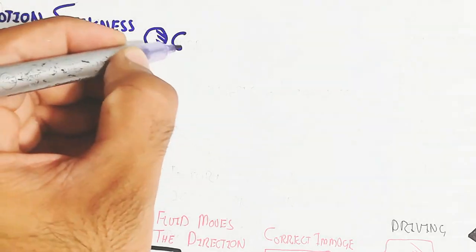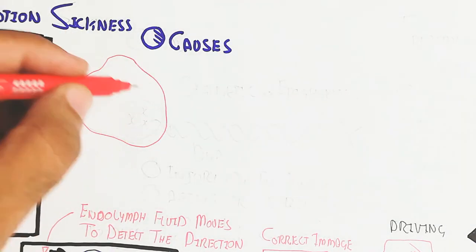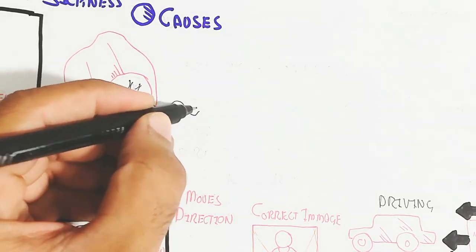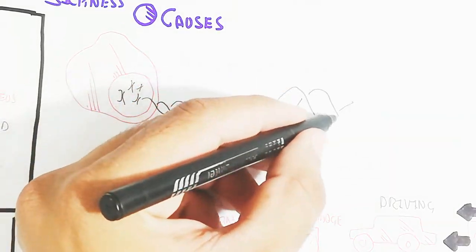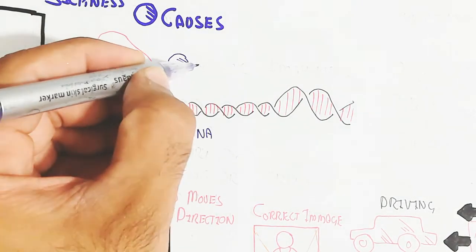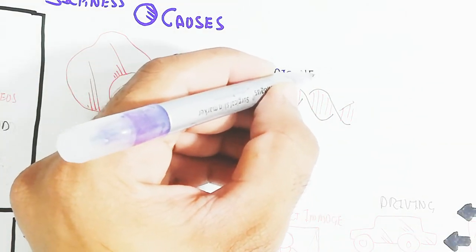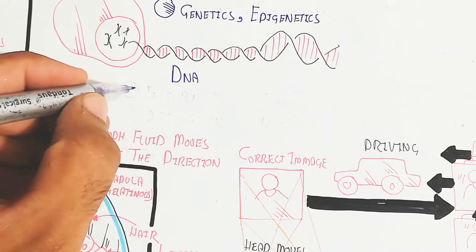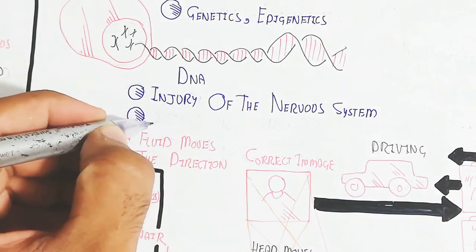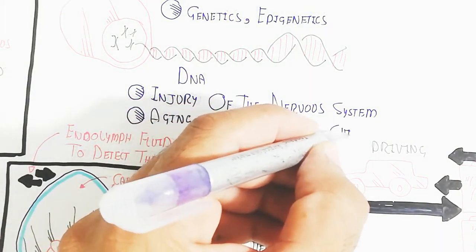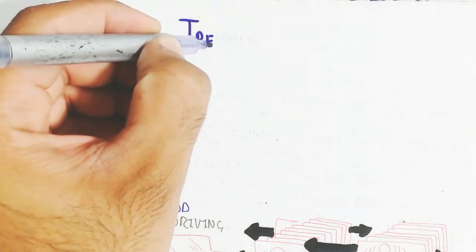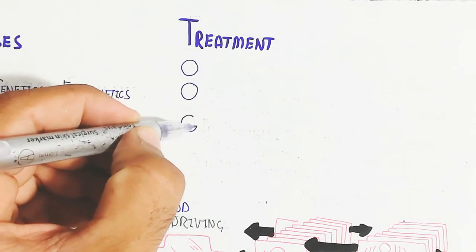The causes of motion sickness include genetic and epigenetic factors due to DNA — if your parents carry that DNA, it is present in your own nucleus. Nervous system injury is also involved, as well as aging or early childhood. Epigenetically, you may not feel vomiting during childhood but feel it when older due to changes in your body's physiology. Genetic refers to the parental character expressed in your body, while epigenetic is above the genetic level.